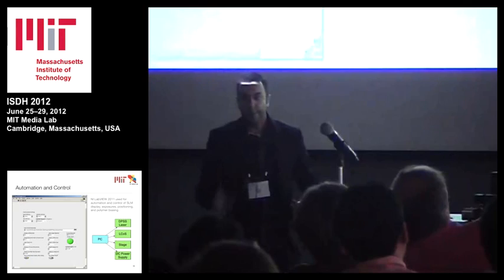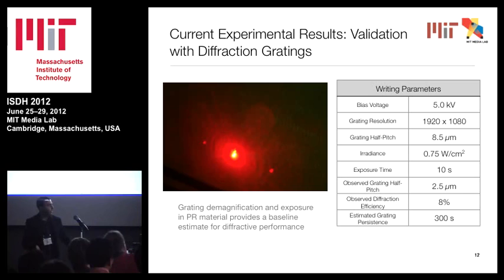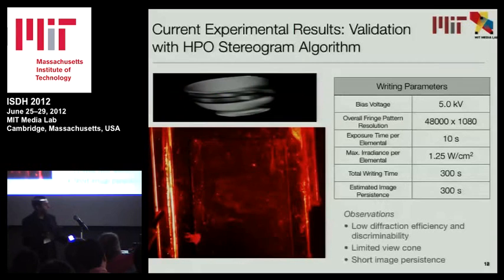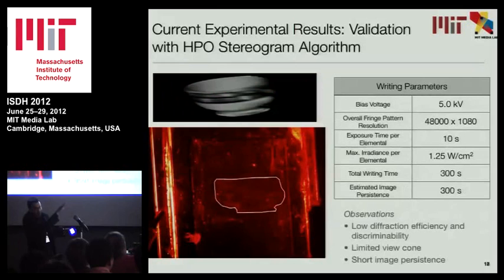For results, we first did a validation test with diffraction gratings, imaging them directly from the SLM onto the photorefracted material. Diffraction gratings at the SLM have a half pitch of 8.5 microns, and through the telecentric system we observe a half pitch of 2.5 microns — back-calculated from the observed diffraction angle and illumination angle. We observed a diffraction efficiency of about 8% and an estimated grating persistence of maybe five minutes. This first print used not the DSCP but an earlier HPO stereogram algorithm with a teacup model. It suffers from low diffraction efficiency, low discriminability, a limited view cone, and short image persistence.